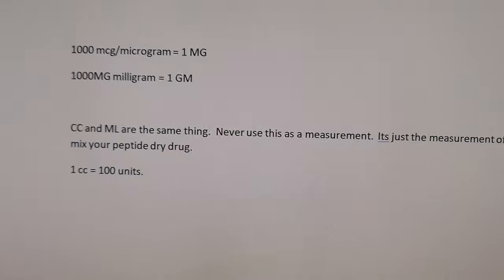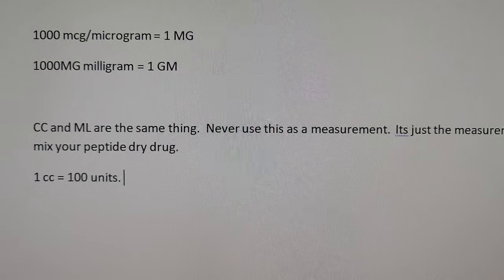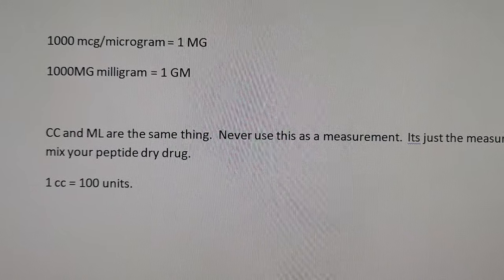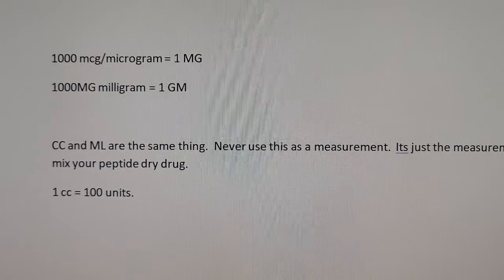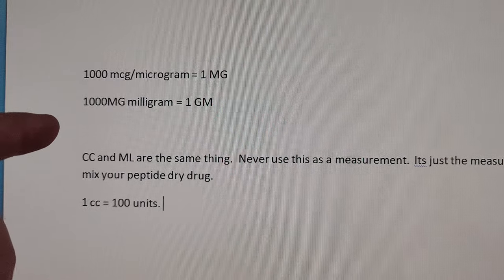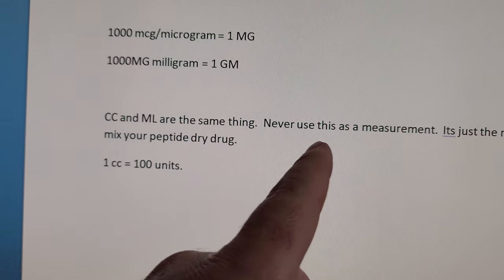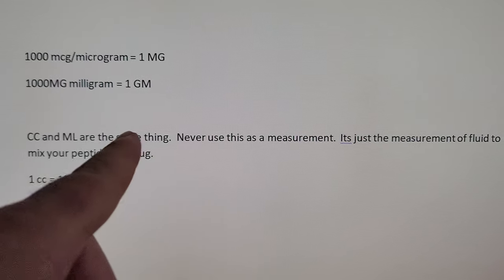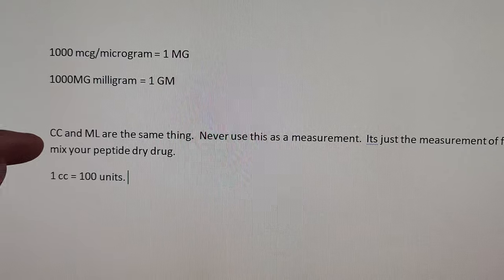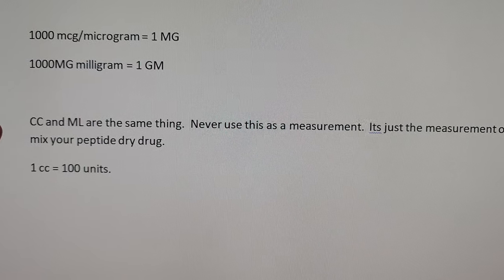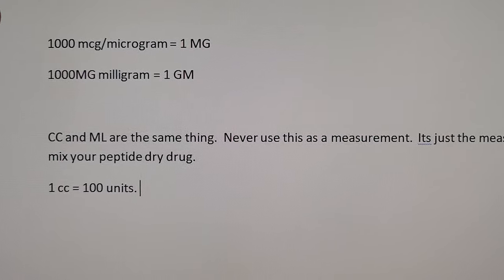The first thing people get confused on is milligrams, grams, and micrograms. When you get a peptide — say you got retatrutide 5 milligrams — that means you have 5 milligrams of dry drug in the vial. Milligrams is the dry drug. A lot of people on Reddit give drug doses in cc's and milliliters, but never use cc's or milliliters as a drug measurement — that's just the volume of fluid you mix your dry drug into.